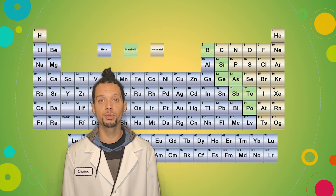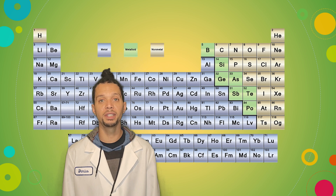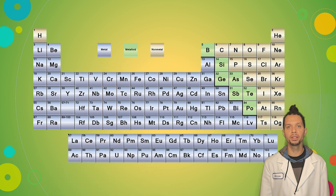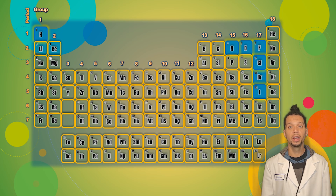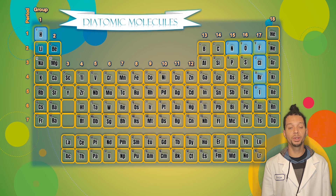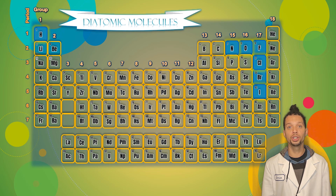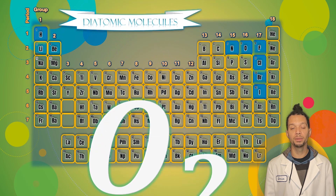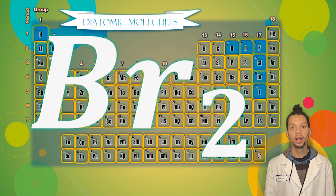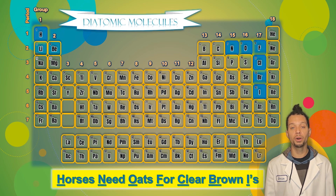The majority of our covalent compounds will form between nonmetals, which are the elements on the right side of the periodic table. But there are other types of molecules out there in the world that also contain covalent bonds. Out of the 118 elements in the world, seven of them only exist when they are bonded with another atom of themselves, and we call them diatomic molecules. These molecules are made up of two of the same atoms bonded together — and 'di' just happens to be the prefix for two. To show that all diatomic molecules have two atoms in them, we use the subscript two next to the symbol, and a phrase I like to use to remember which elements form diatomic molecules is: horses need oats for clear brown eyes.